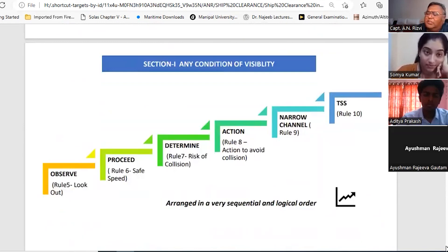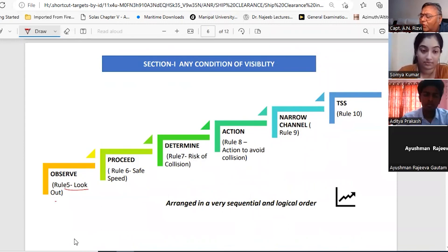Now let's talk about section 1. Section 1 rules are in very sequential order. First of all, if you are driving a car you observe, you proceed, you determine whether you are going to hit the other, and then you take action. Similarly here - rule 5 lookout, observe; rule 6 safe speed; then you determine risk of collision; and then you take action to avoid collision. Of course later on these two rules were added - narrow channel and TSS.